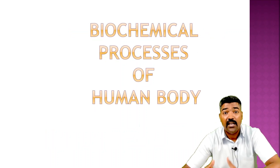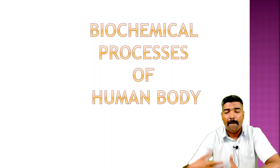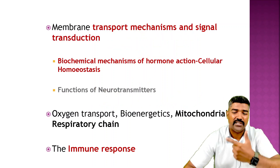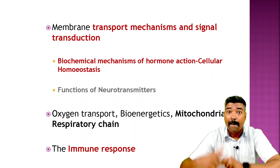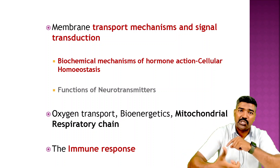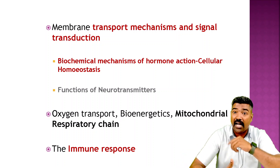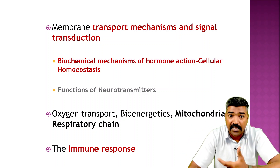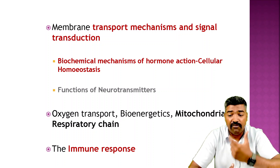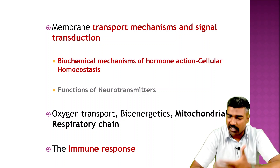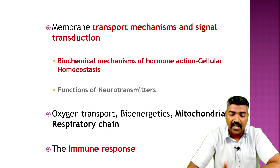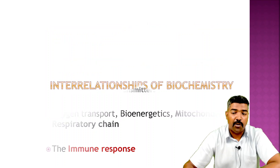Now we can see how biochemistry is processed in the human body. The biochemical processes include membrane transport mechanisms and signal transduction, hormonal reactions, cellular homeostasis, function of neurotransmitters, oxygen transport, bioenergetics, the mitochondrial respiratory chain, and immune responses.